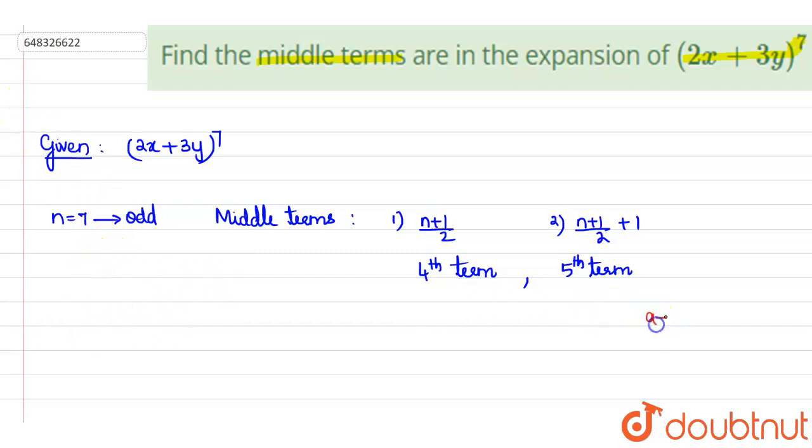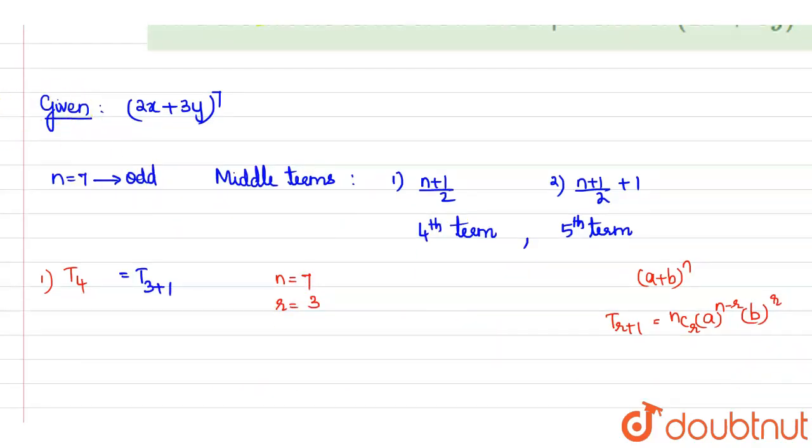Now we know in the general expansion of (a + b)^n binomial expansion, the (r+1)th term, T_(r+1) is given by nCr × a^(n-r) × b^r. So similarly, if we have to find out t4, t4 we can write this as equal to T_(3+1). So in this case, we have to consider the n value as 7 and r value to be equal to 3.